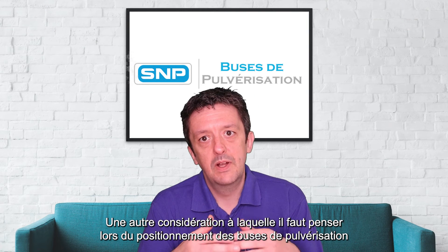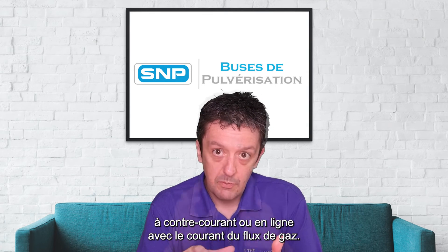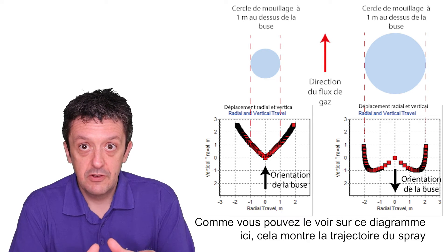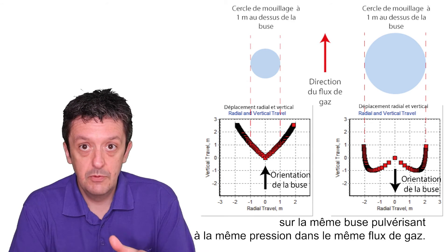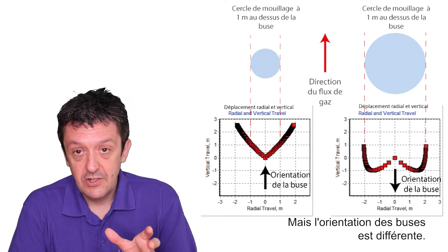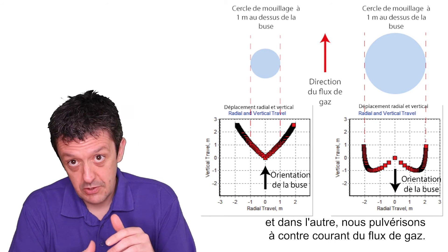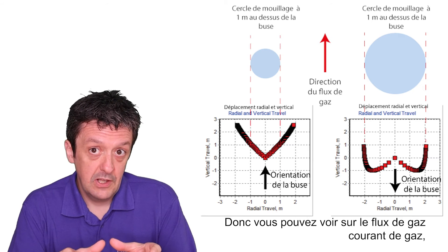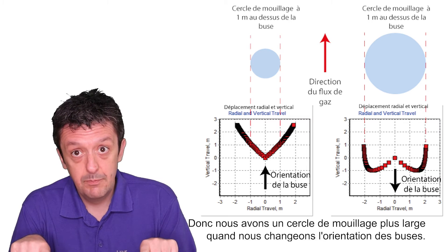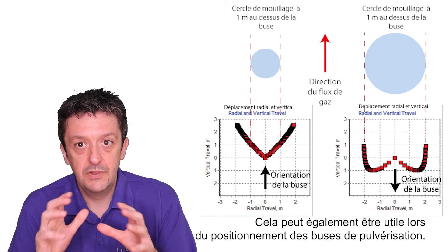One other consideration when positioning spray nozzles is whether to spray them counter-current or in line with the gas flow. As you can see on this diagram, this shows the spray trajectory for the heavier droplets on the same nozzle at the same pressure in the same gas flow, but with different nozzle orientations — one spraying in line and one counter-current. As you can see, the counter-current orientation actually achieves a wider distribution and a wider circle of wetting, which can also be helpful when positioning spray nozzles.